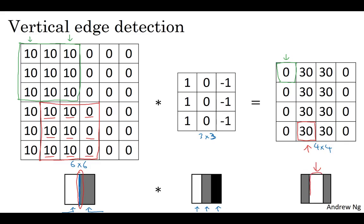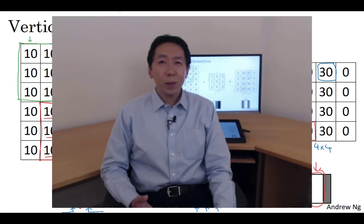In this example, the bright region in the middle is just the output image's way of saying there's a strong vertical edge right down the middle of the image. The intuition for vertical edge detection is that a vertical edge is a three-by-three region where there are bright pixels on the left, you don't care that much what's in the middle, and dark pixels on the right. And the convolution operation gives you a convenient way to specify how to find these vertical edges in an image. You've now seen how the convolution operator works; in the next video you'll see how to use this as one of the basic building blocks of a convolutional neural network.